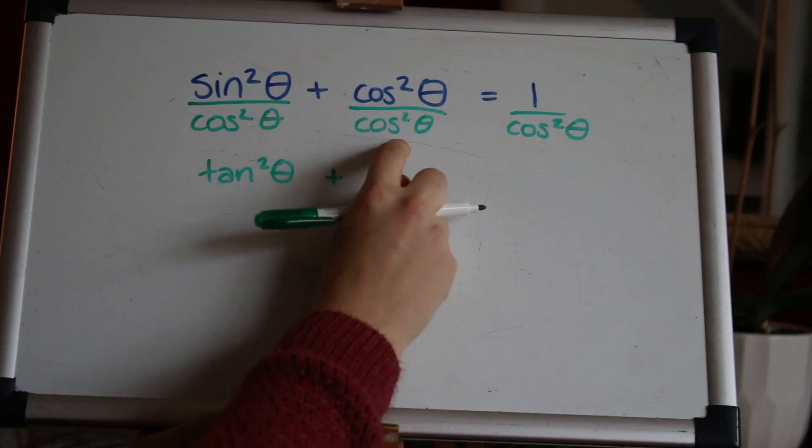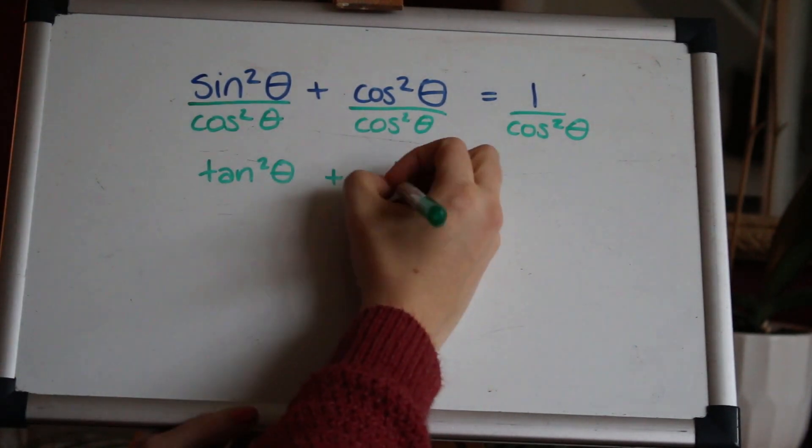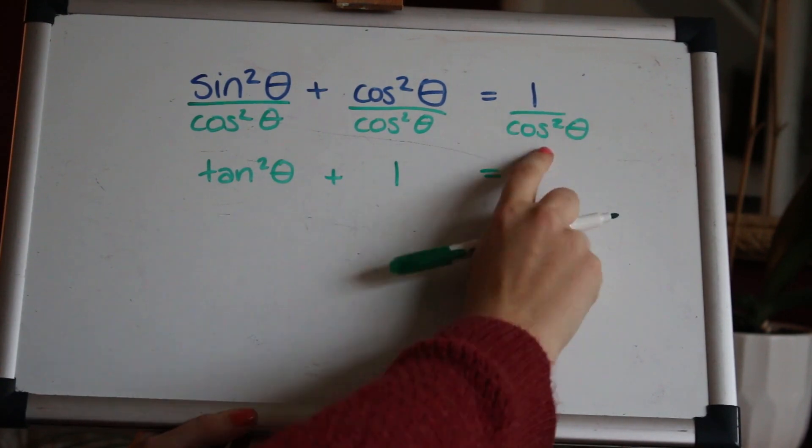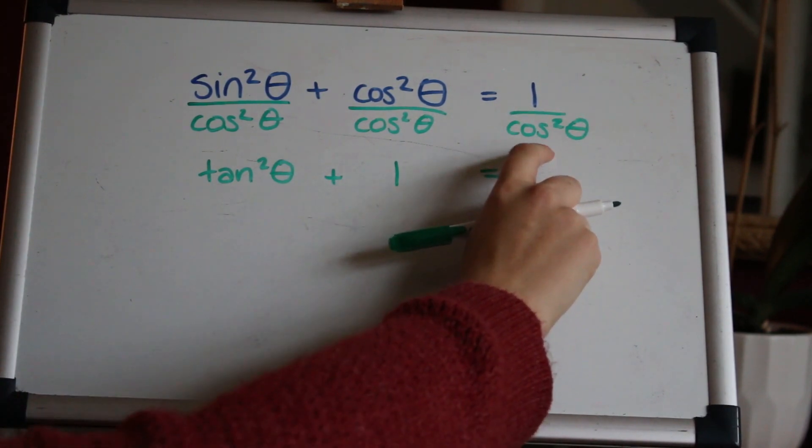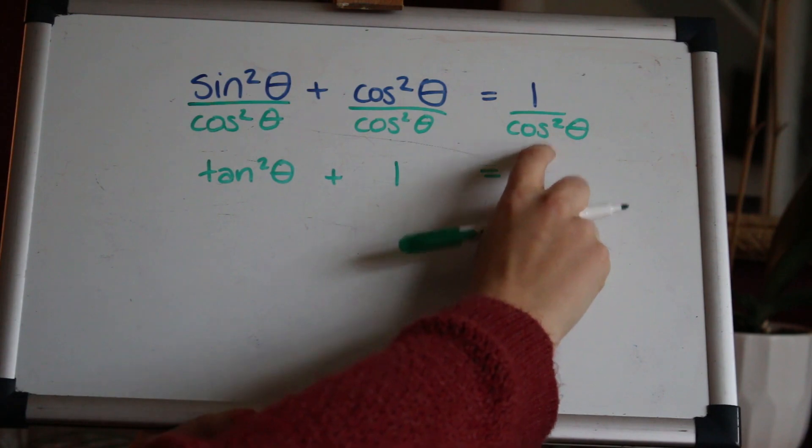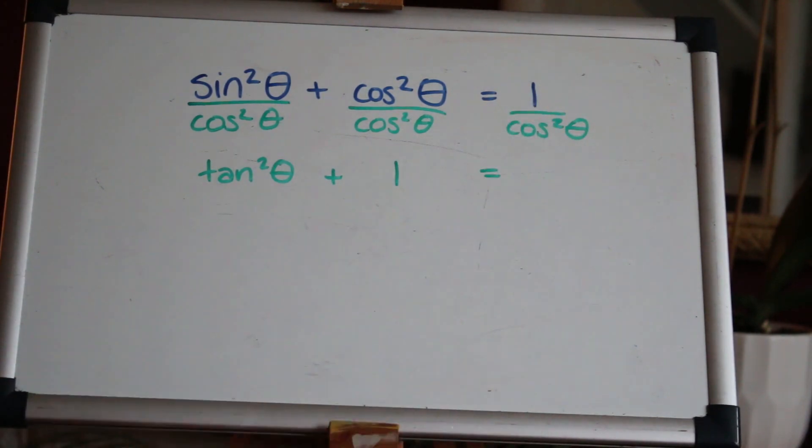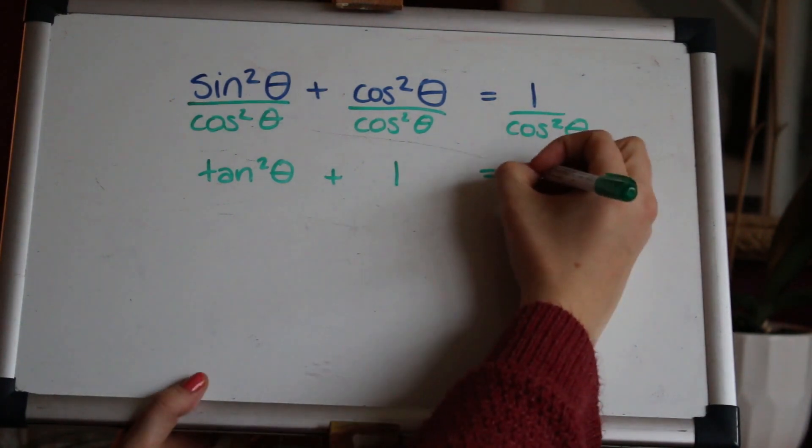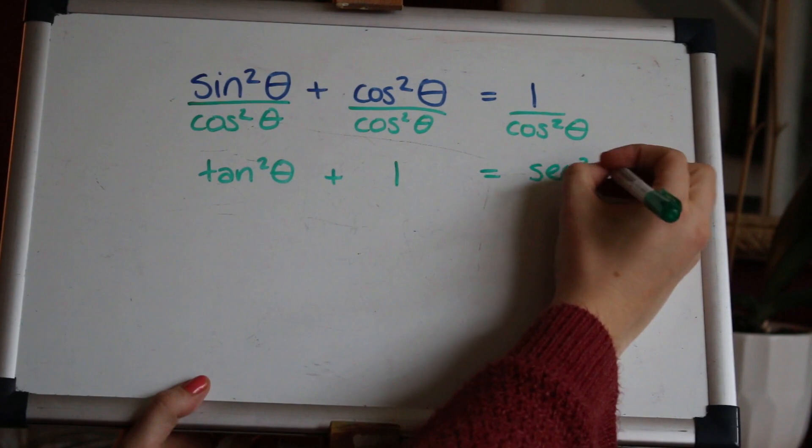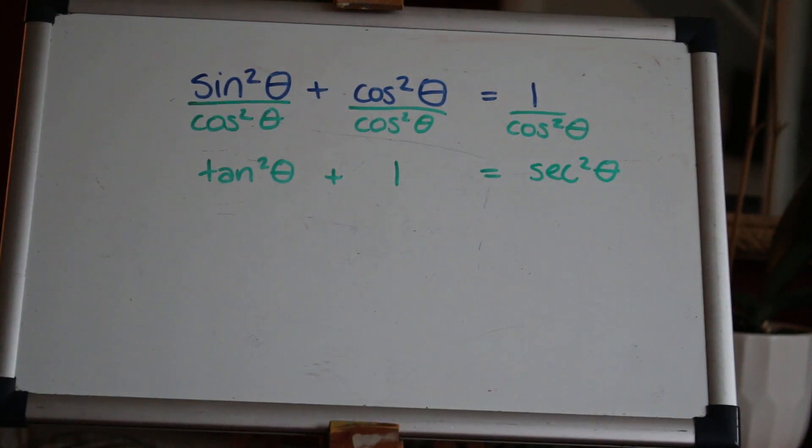Cos²θ over cos²θ cancels to leave you just with one. And then one over cos as we've just seen is sec, so one over cos²θ is the same as sec²θ. And that's your first identity: tan²θ + 1 = sec²θ.